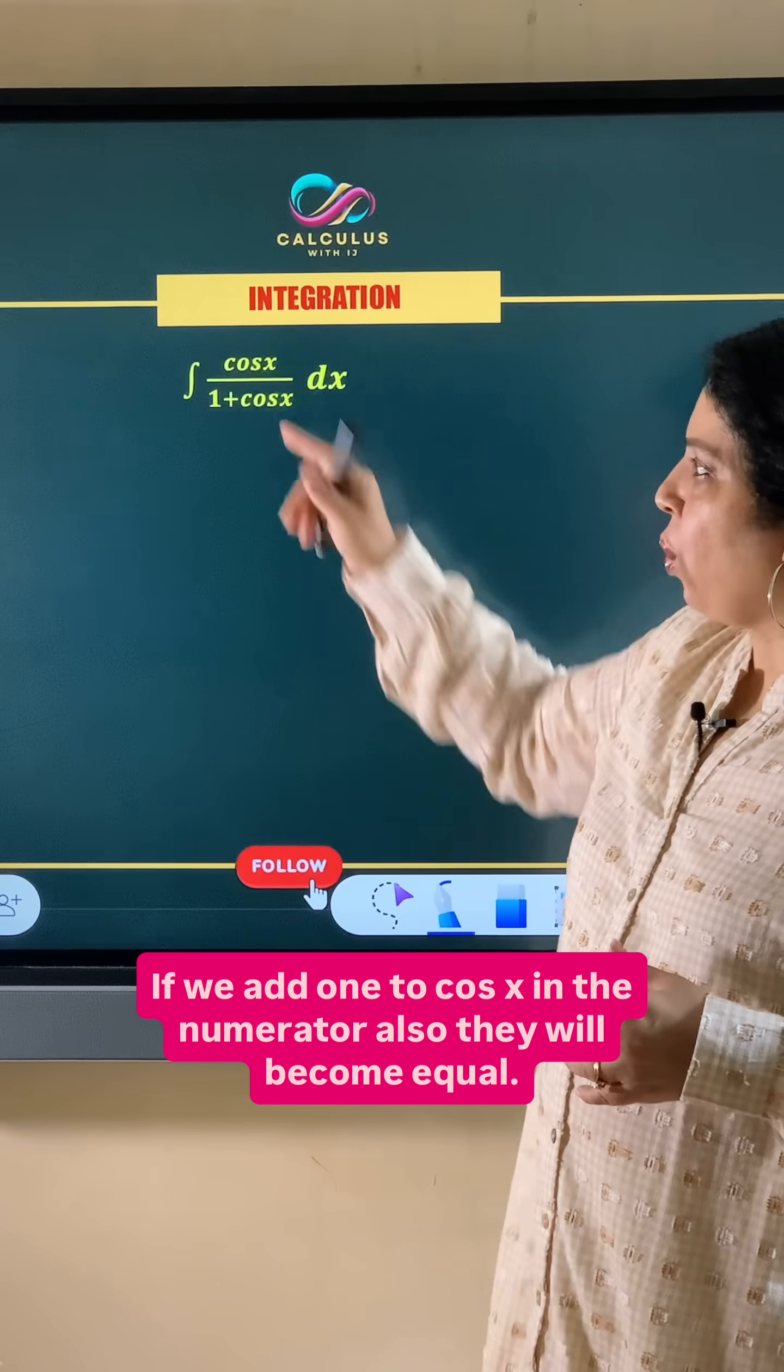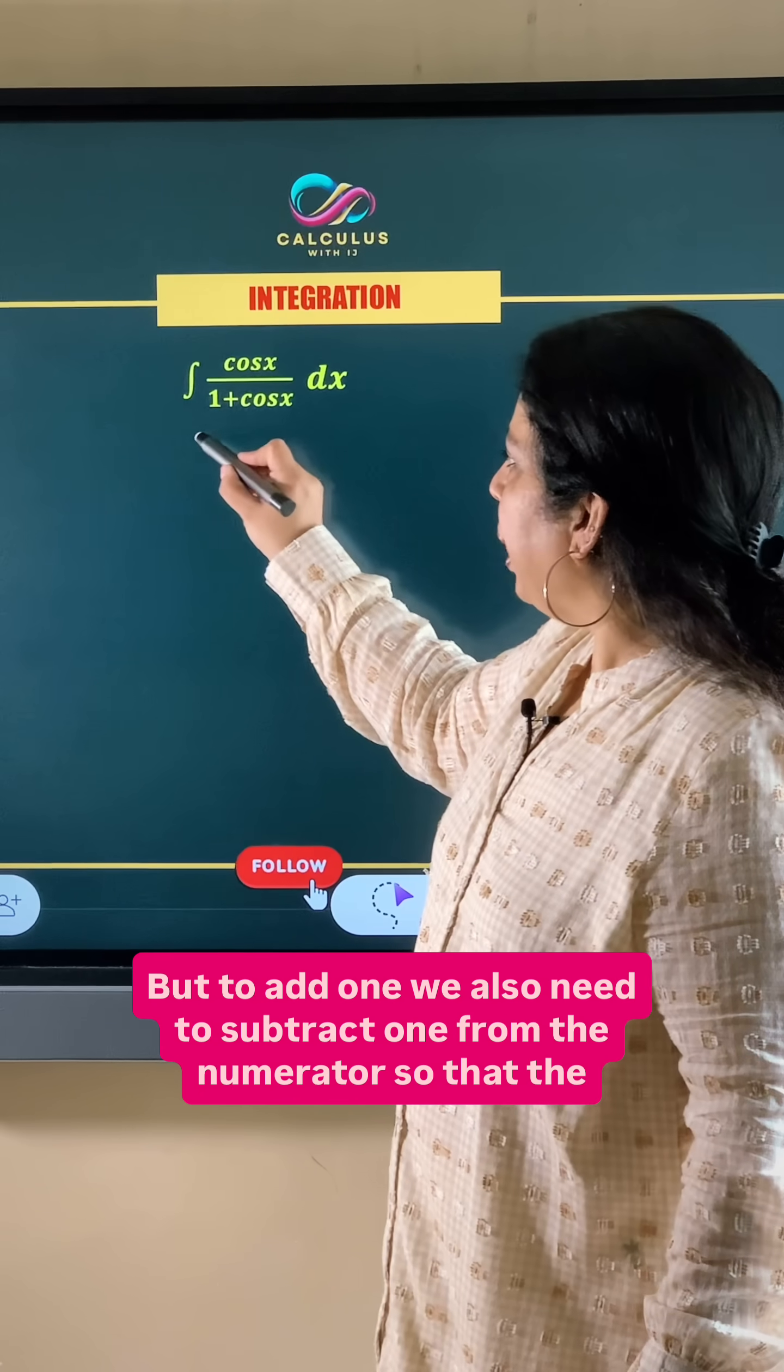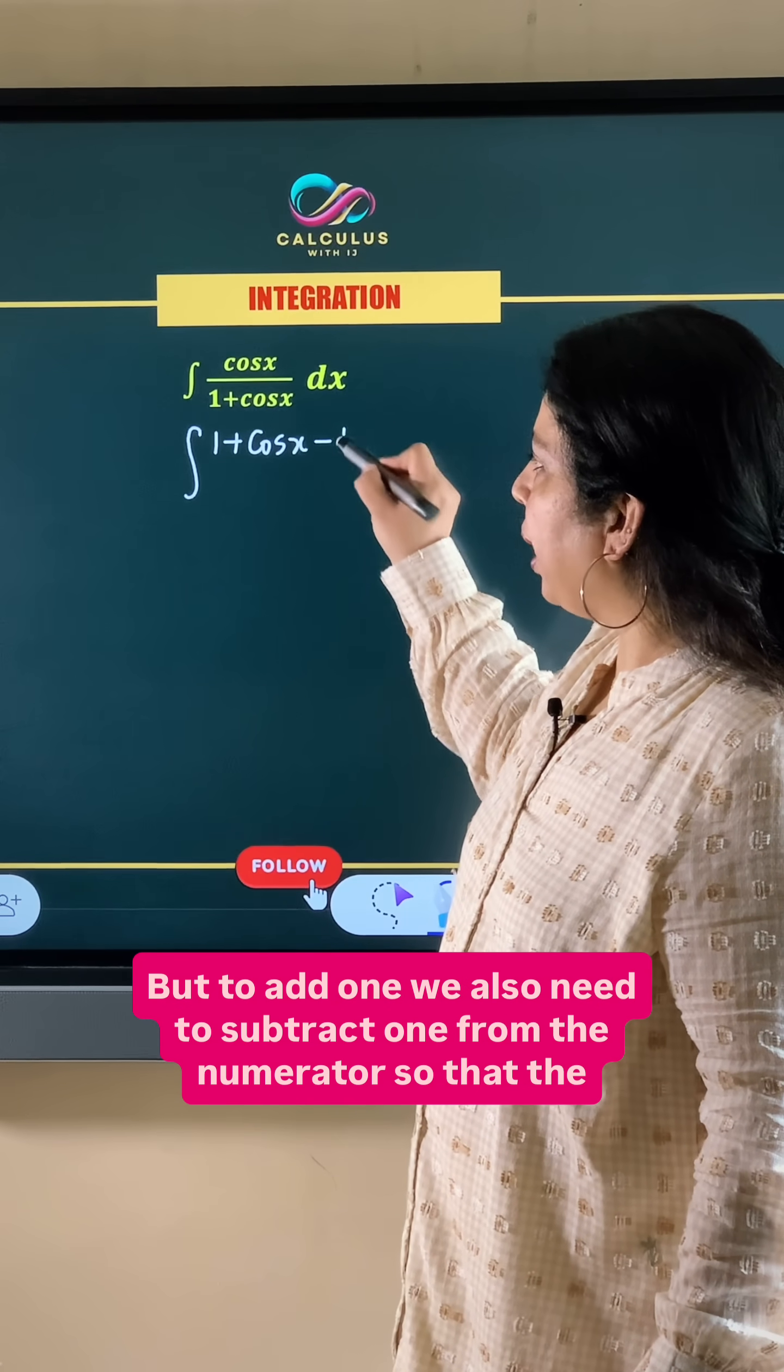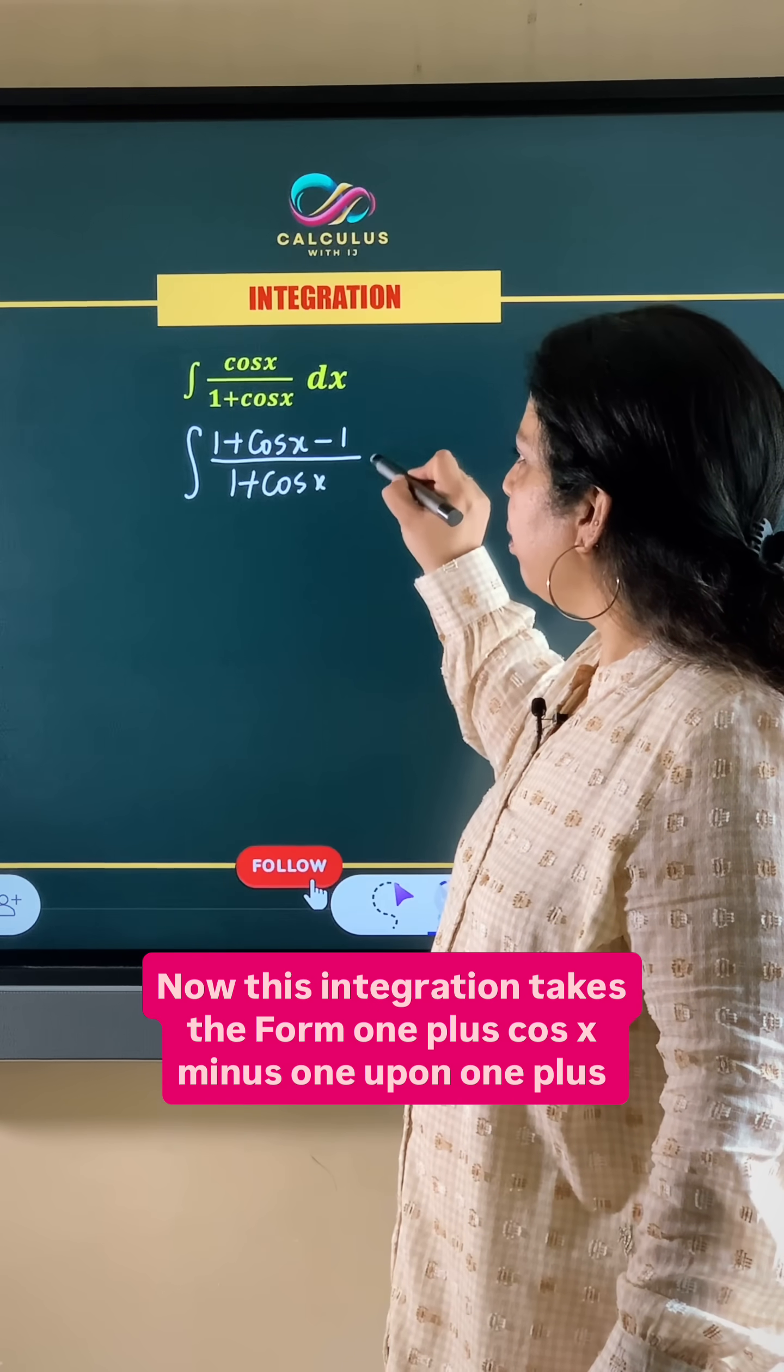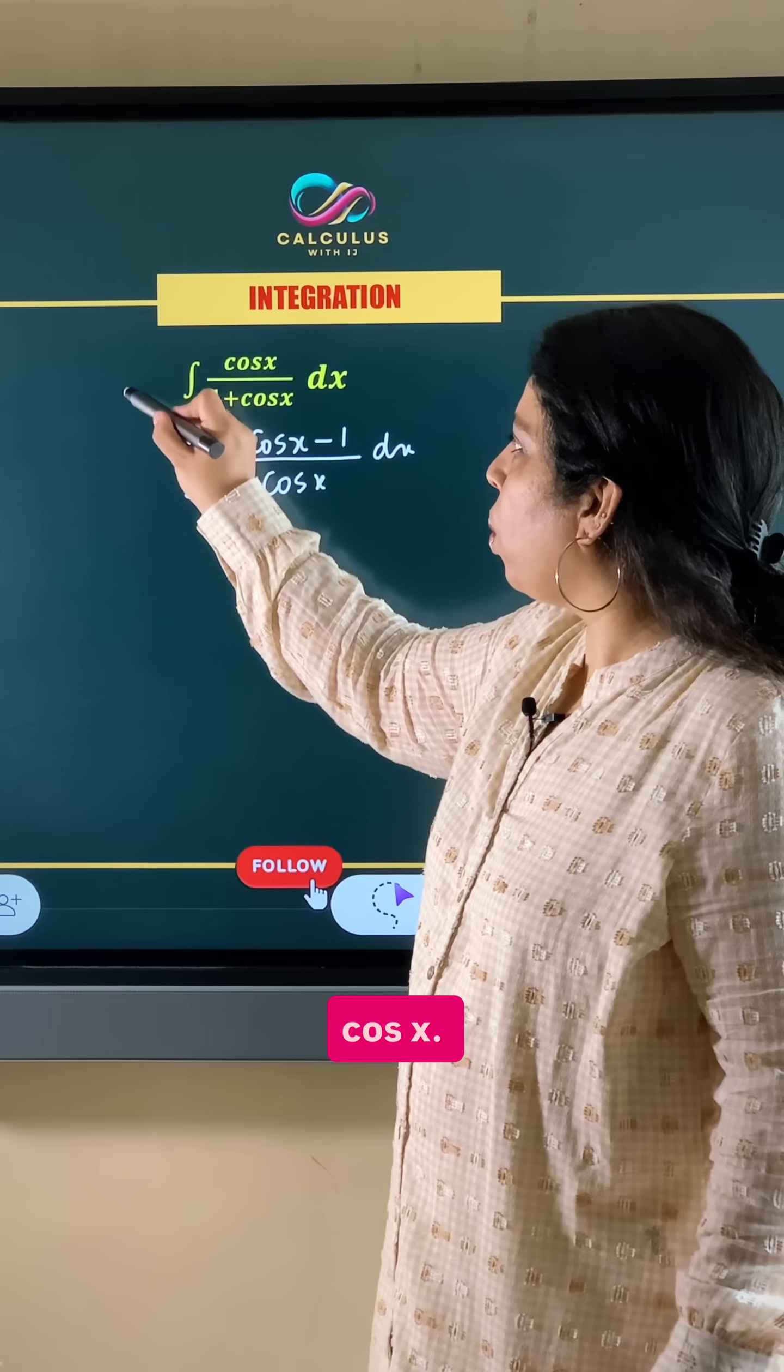If we add 1 to cos x in the numerator also they will become equal. But to add 1 we also need to subtract 1 from the numerator so that the question remains the same. Now this integral takes the form 1 plus cos x minus 1 upon 1 plus cos x.